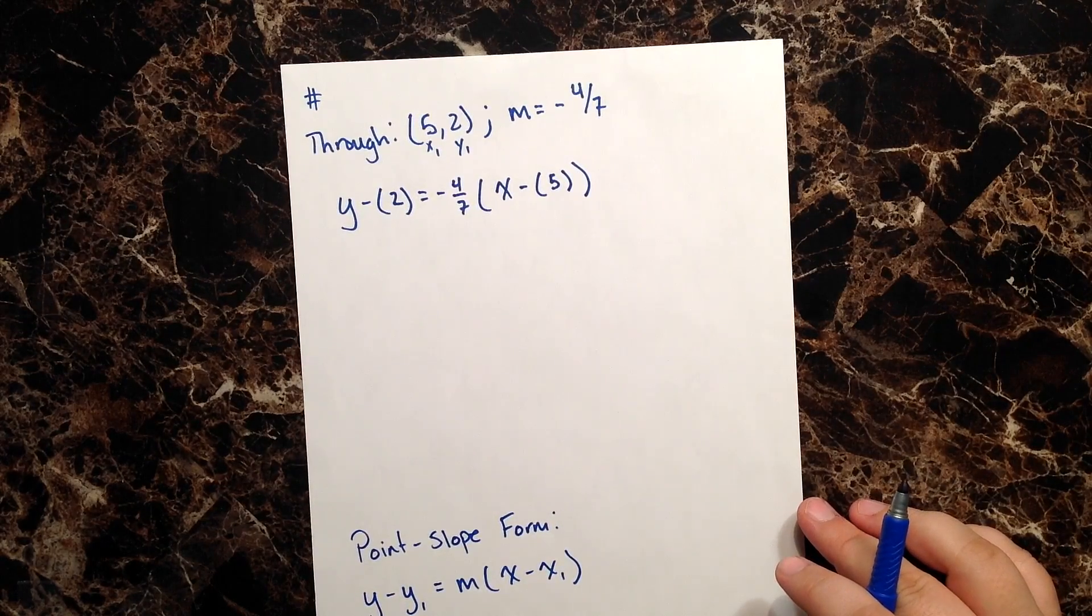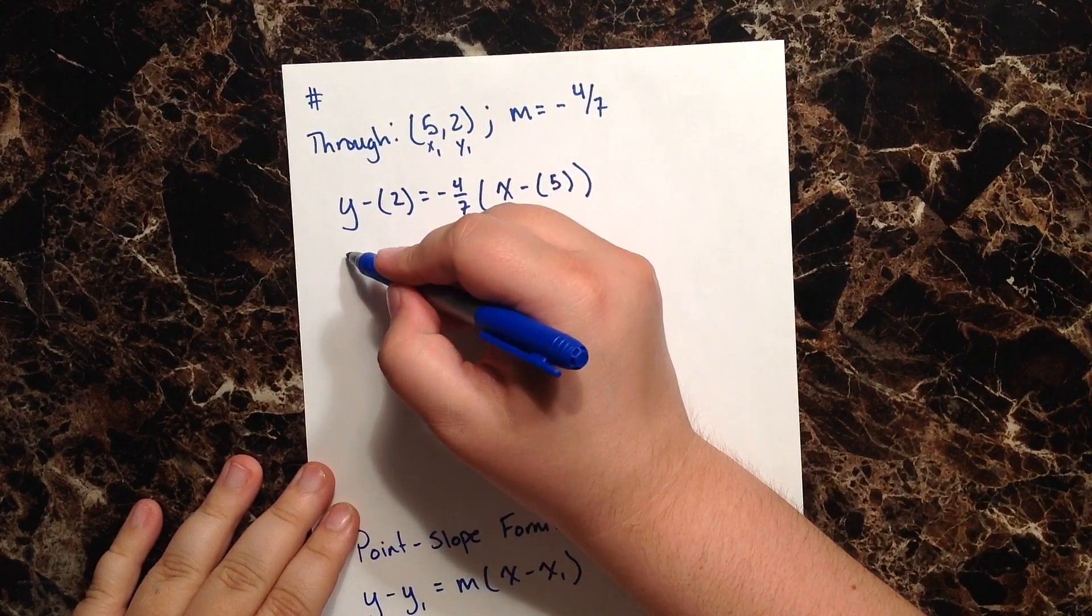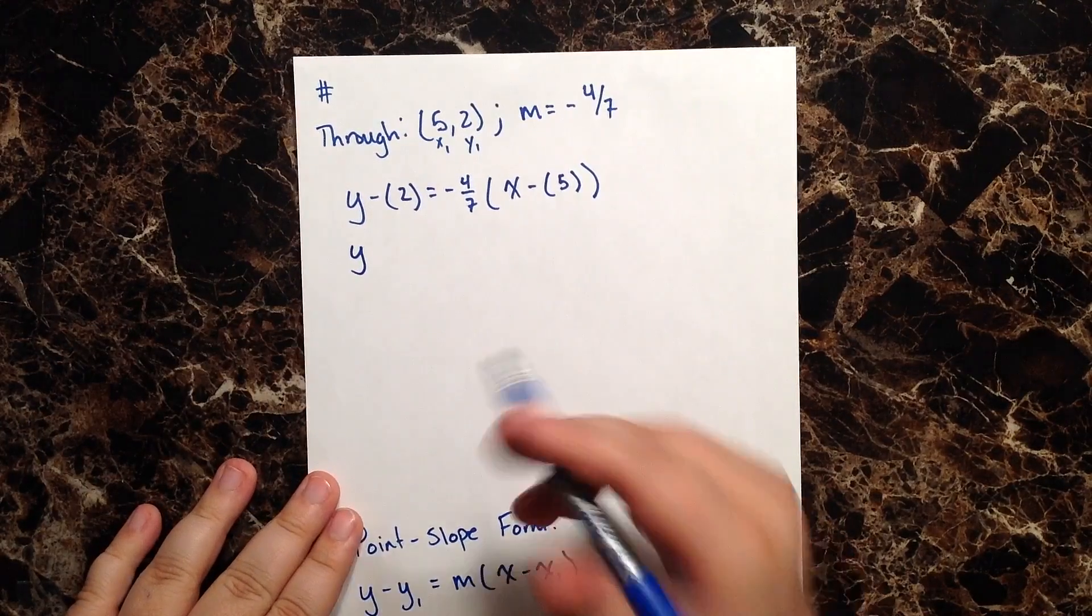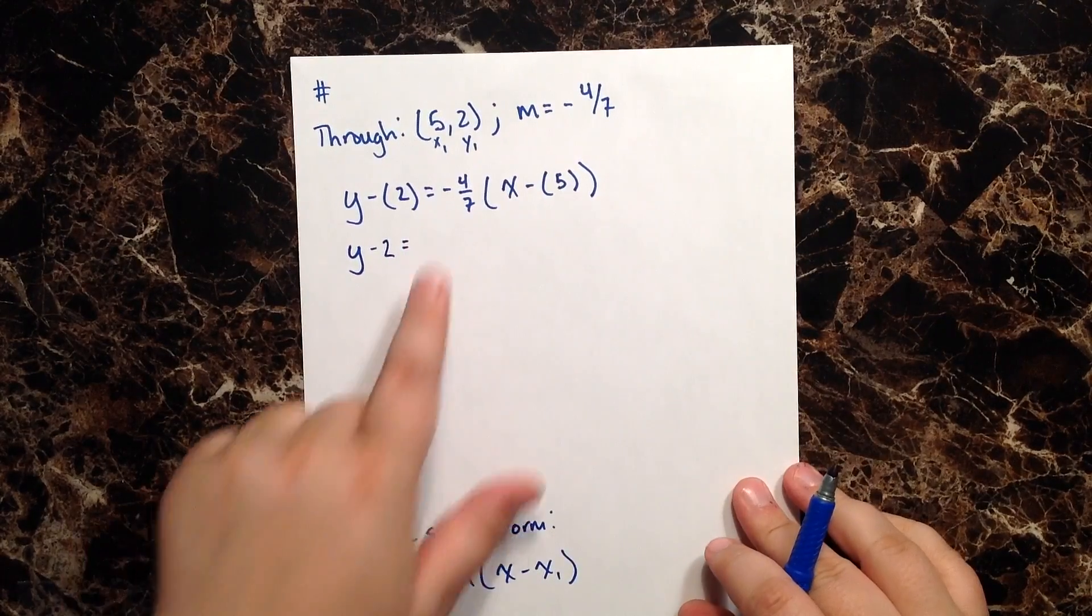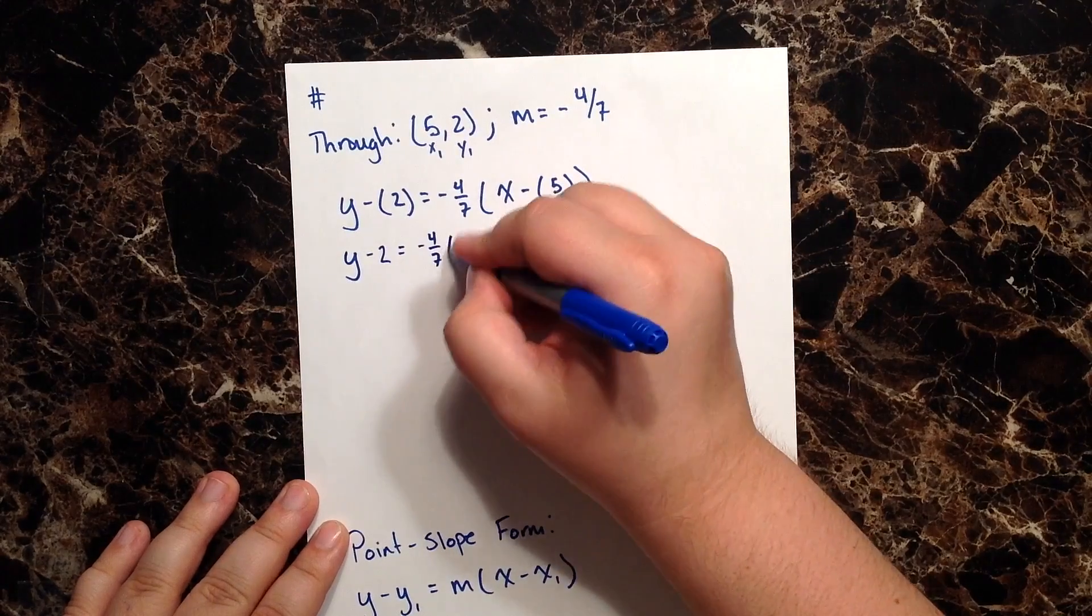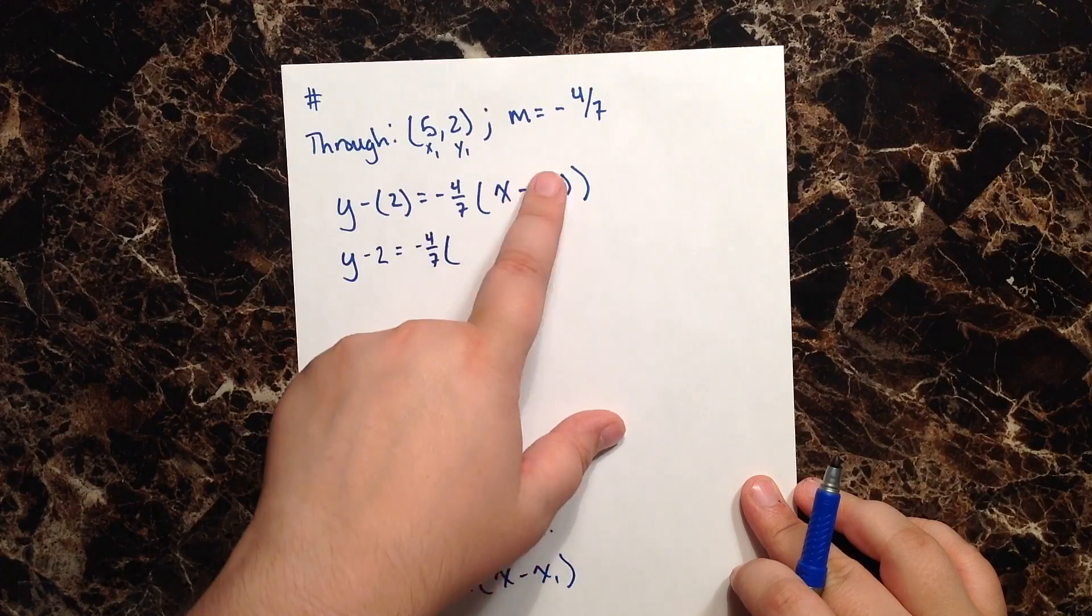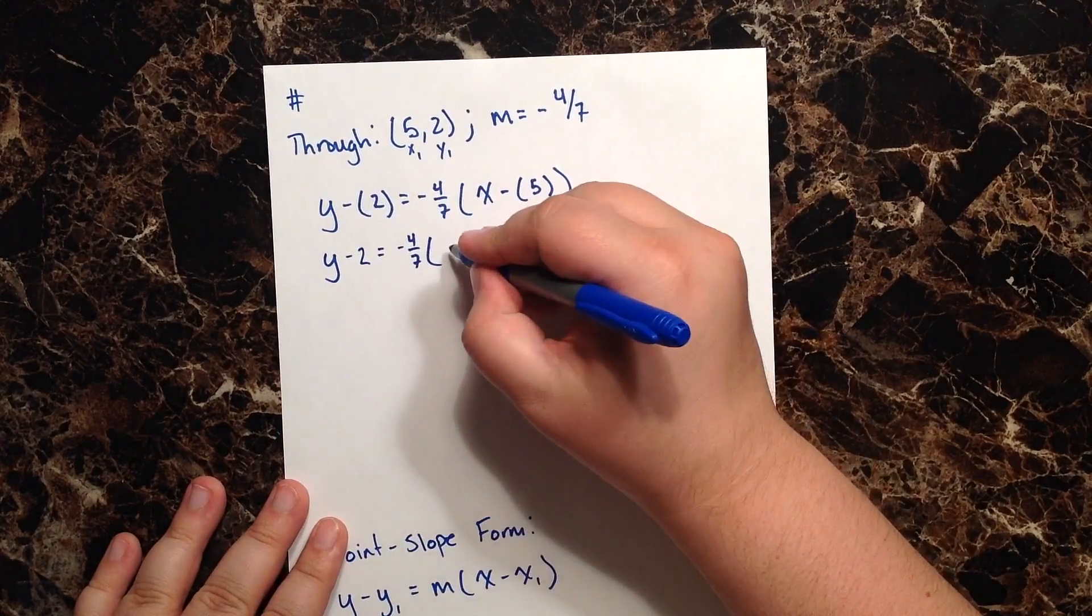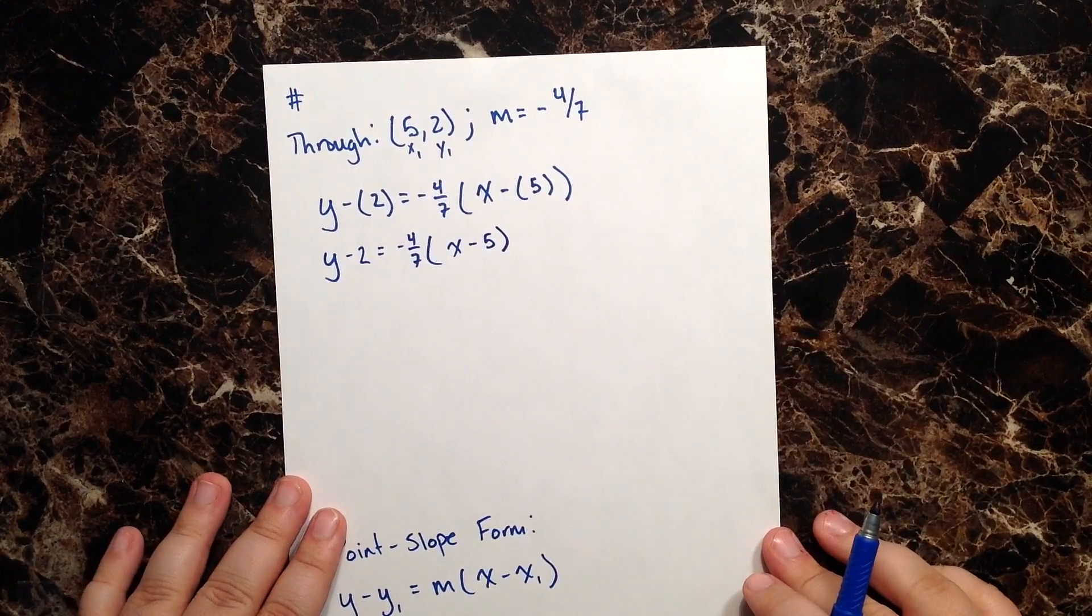So now let's go ahead and start simplifying and making sense out of this. Well, I have y minus 2. When I distribute my negative, this becomes a minus 2, equals negative four over seven. Open my parentheses, I have x minus positive 5. So let's go ahead and distribute that negative to the positive 5, which is just going to give me an x minus 5, and then we'll close our parentheses.